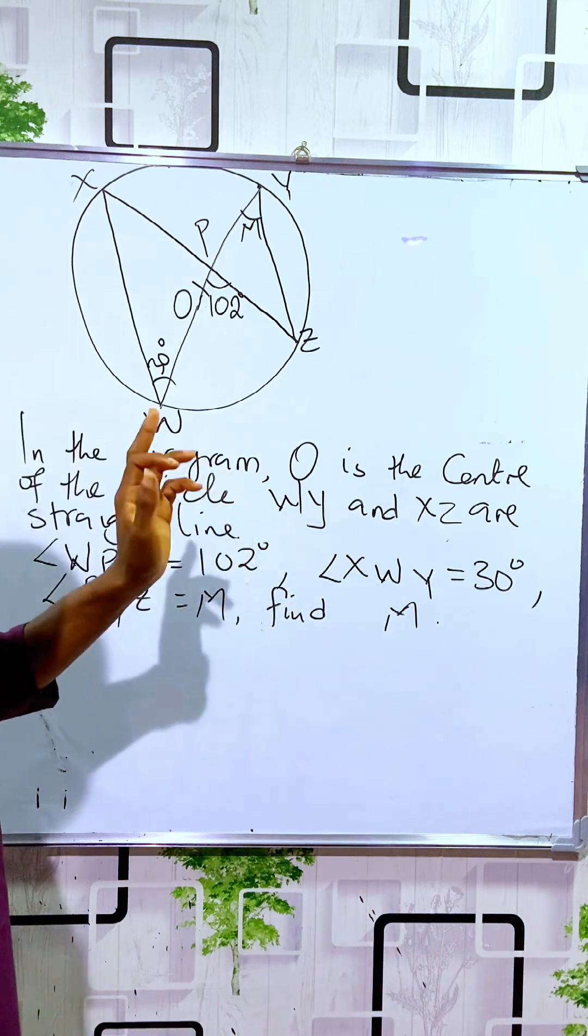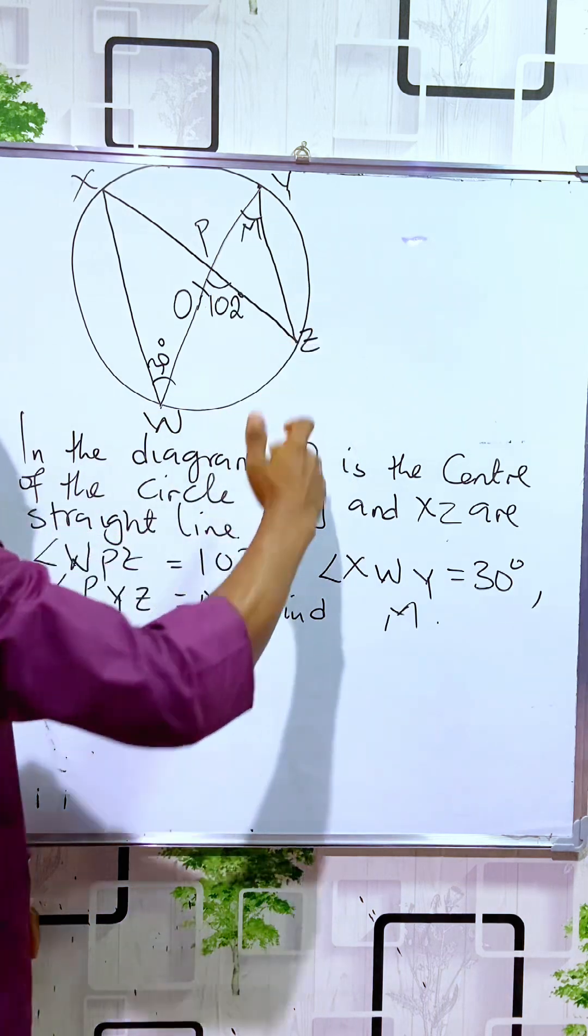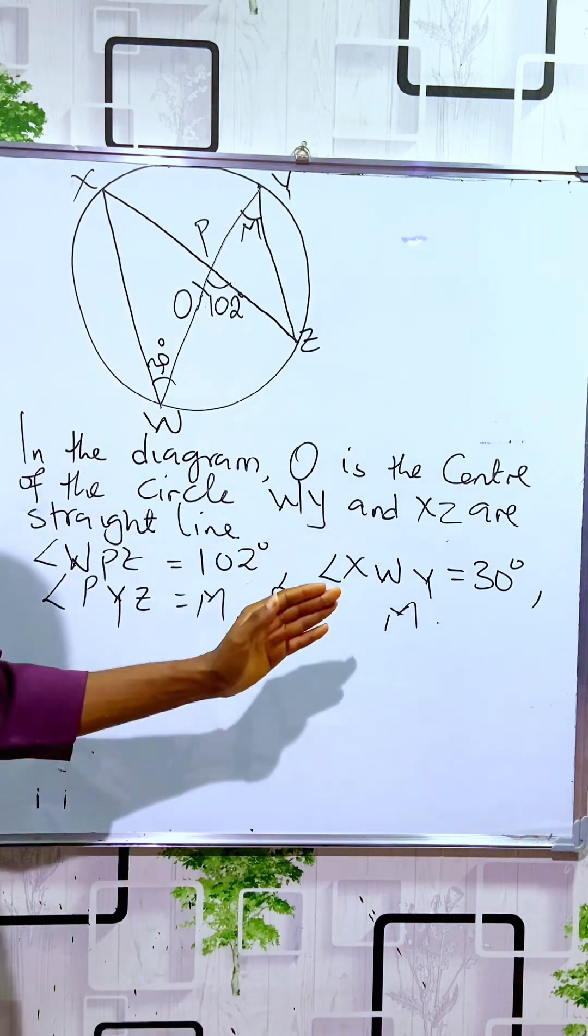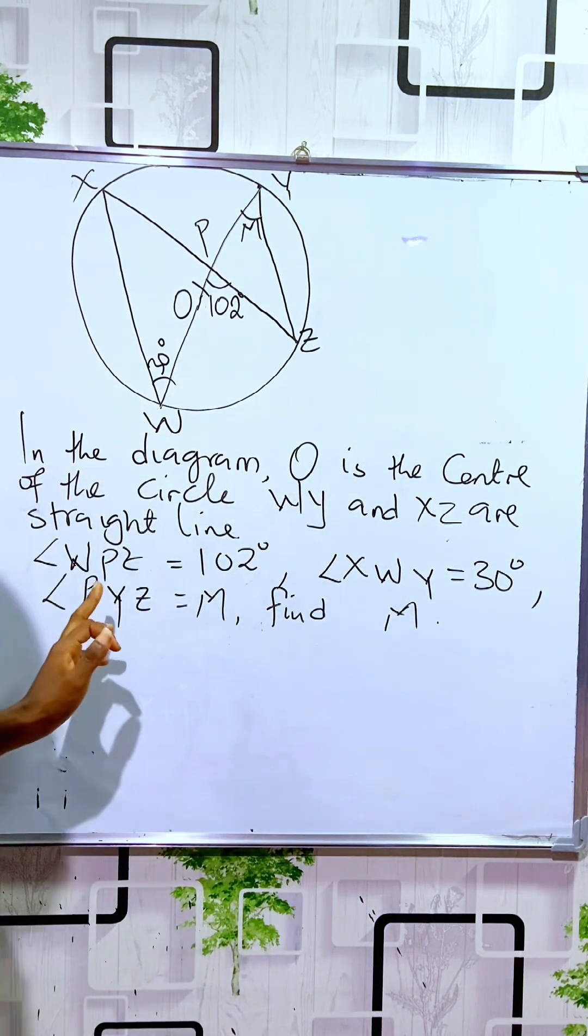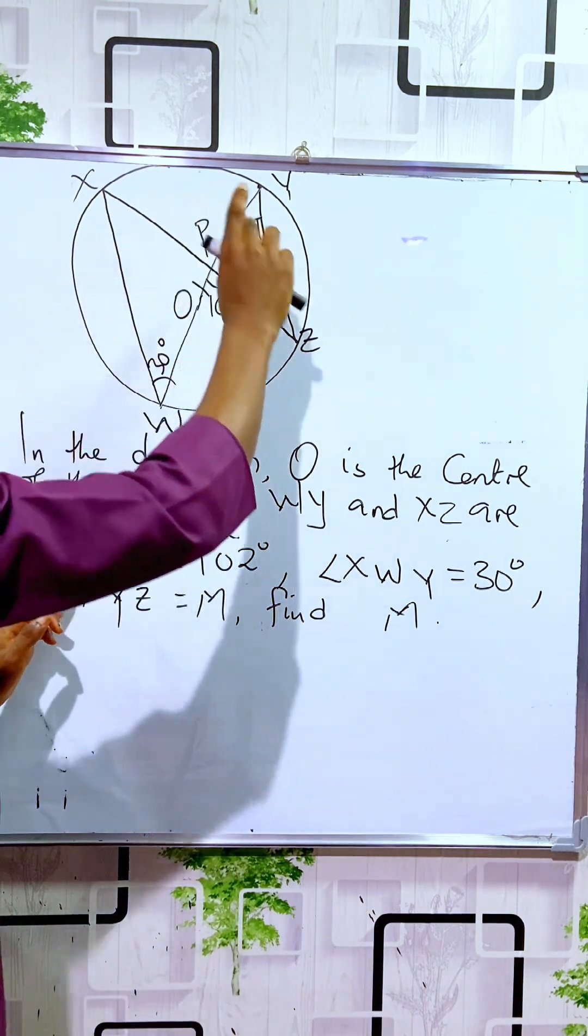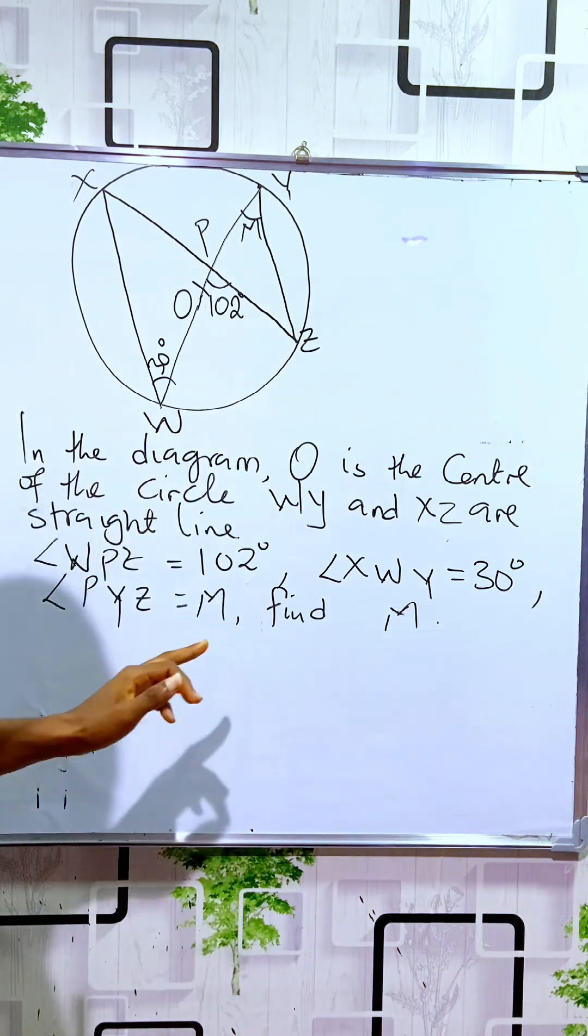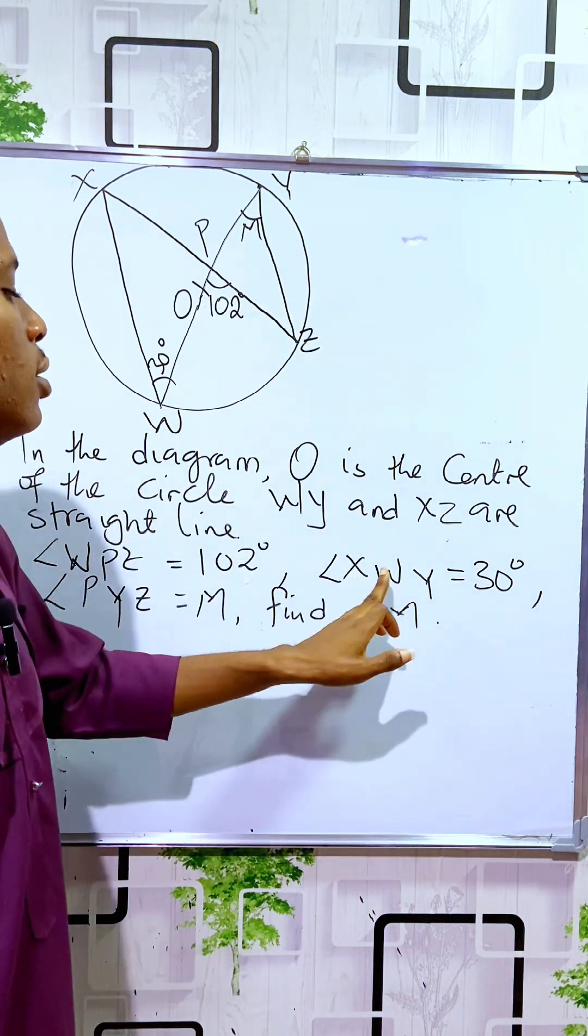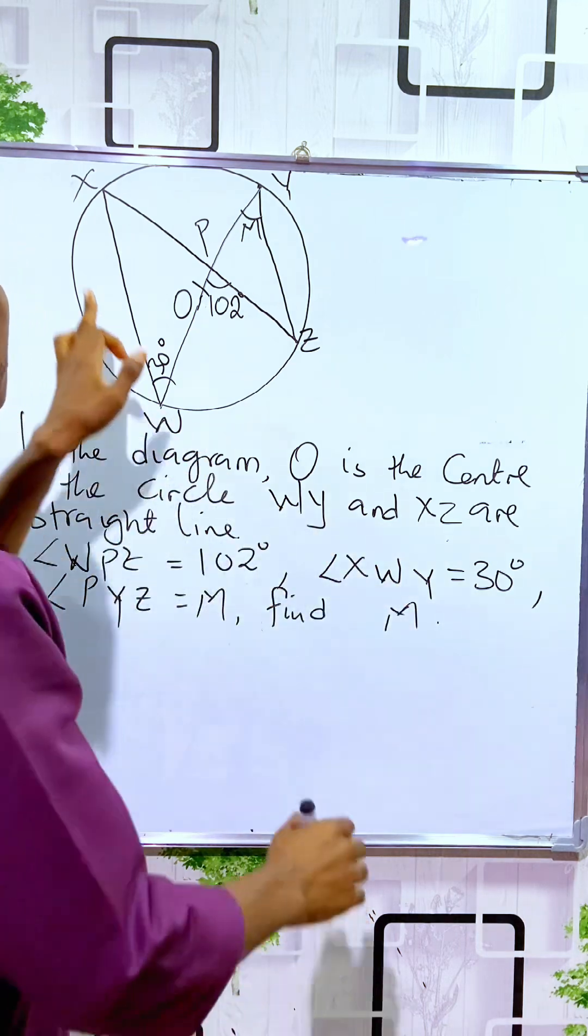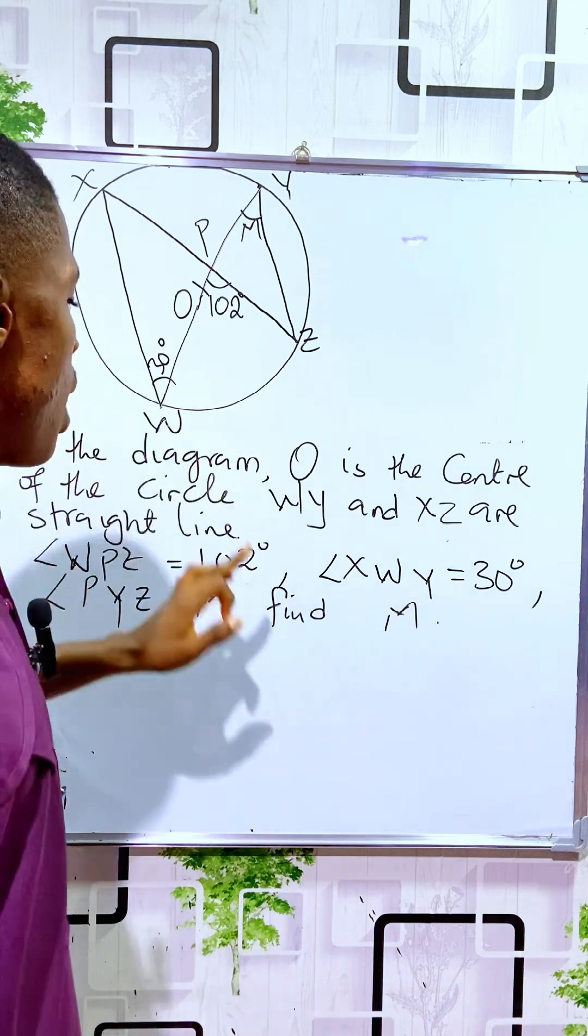We are provided that WY and XZ are straight lines. Angle WPZ is 102 degrees and angle XWY is 30 degrees. We are told to find the value of M.